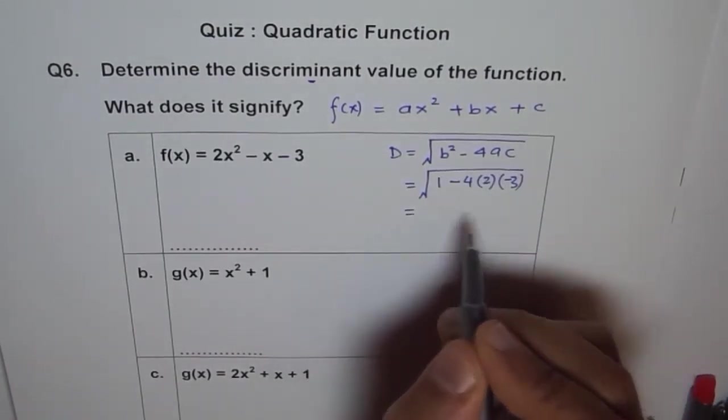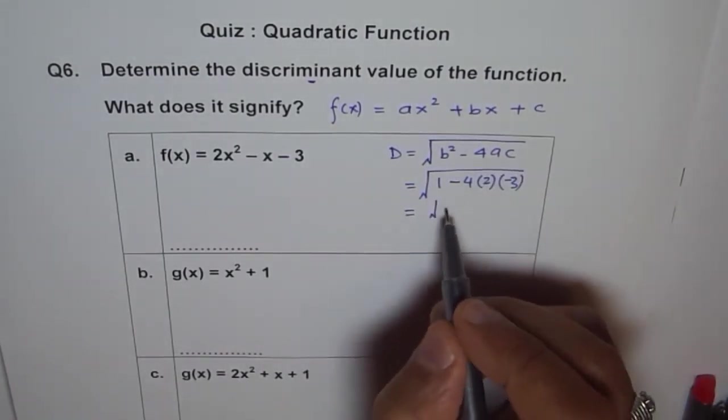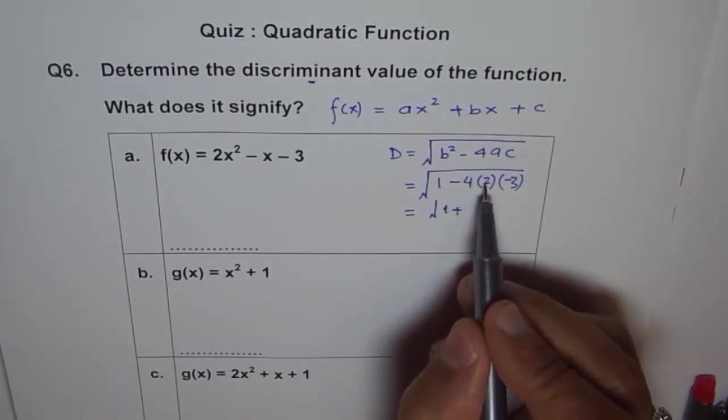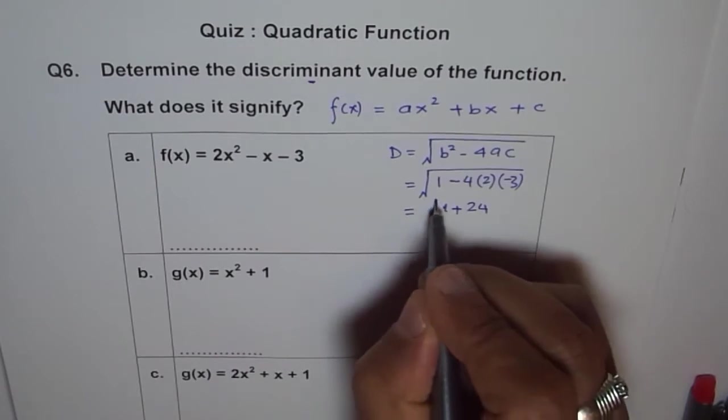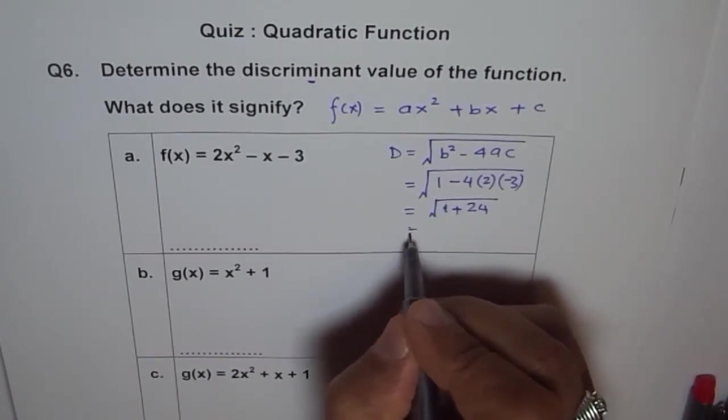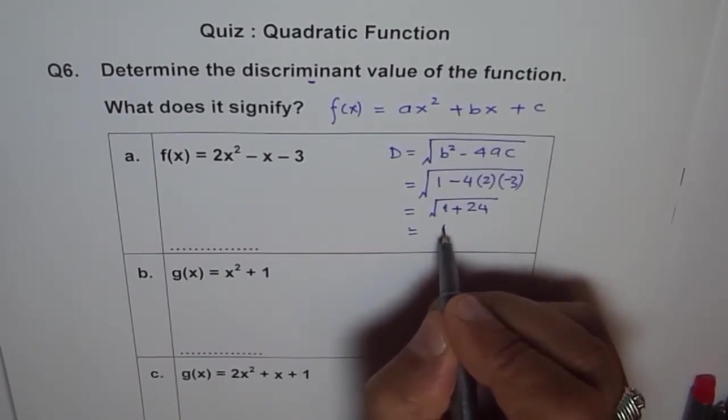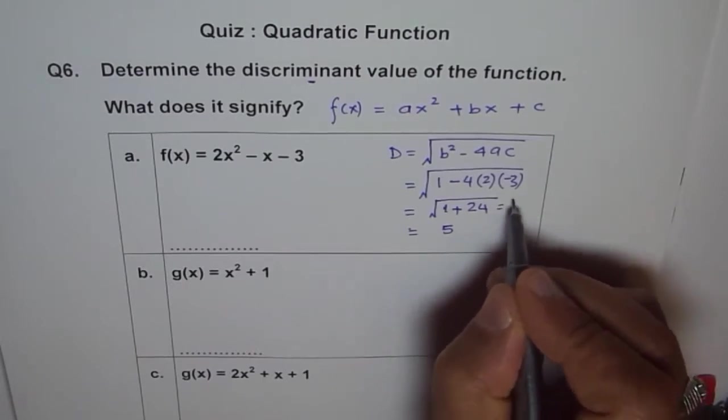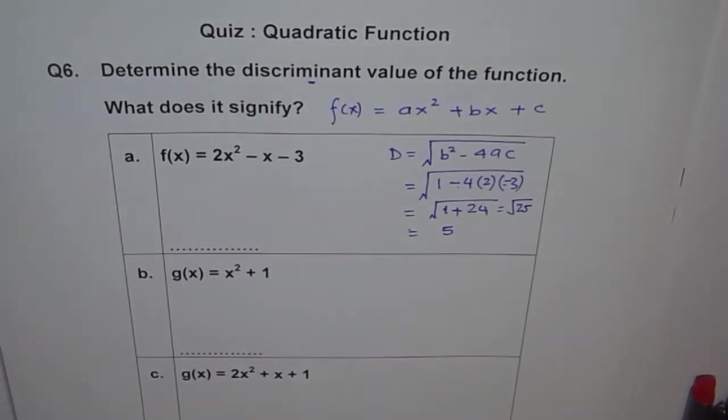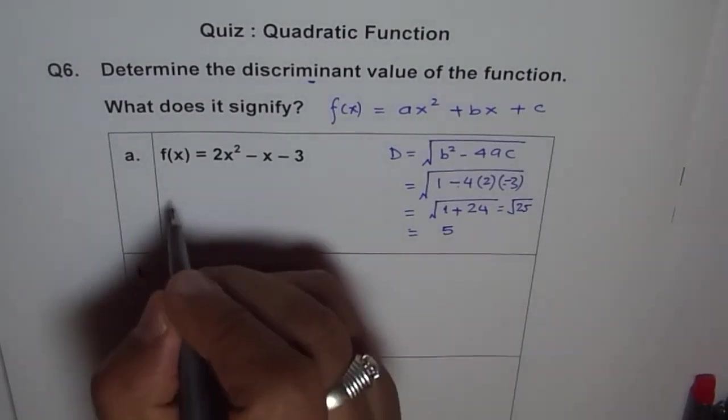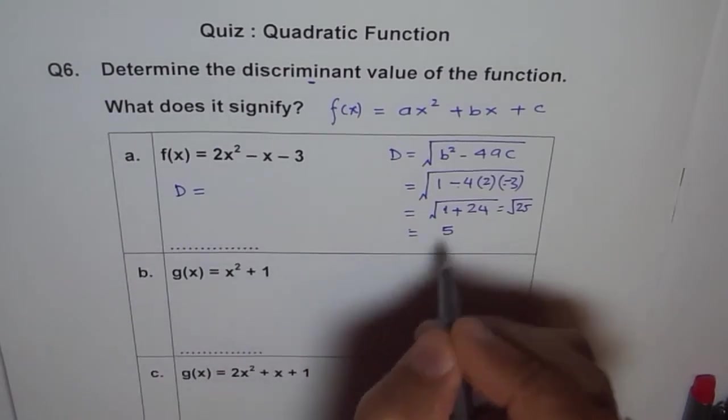This gives us √(1 + 4 × 2 × 3) = √(1 + 24) = √25 = 5. The three negatives gave us plus. So the discriminant value D = 5.